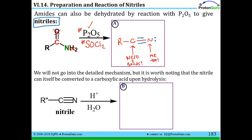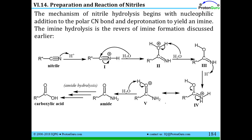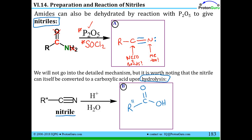We learned a bit about nitrile reactivity when we discussed benzene compounds. A new reaction nitriles can undergo is hydrolysis. Nitriles can undergo reactions similar to what carbonyls do, and the net product is the carboxylic acid. The reactivity of a carbonyl compound is driven by the C=O double bond being polar, and one way to activate the pi bond is to protonate it with an acid. So we have an acid-catalyzed hydrolysis for the nitrile as well.